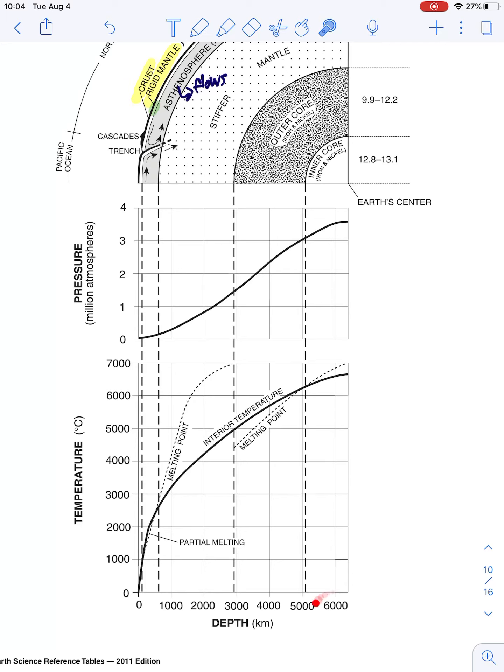My interior temperature is this solid line. And if you notice, the deeper we go, at zero depth, the temperature is basically zero. And as we can go all the way up to beyond 6,000 kilometers, it gets to above 6,000 degrees centigrade.